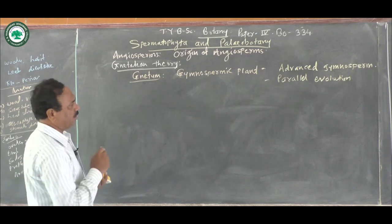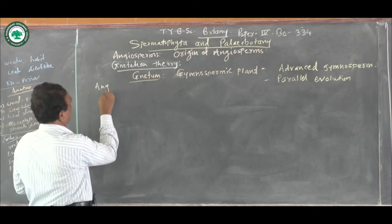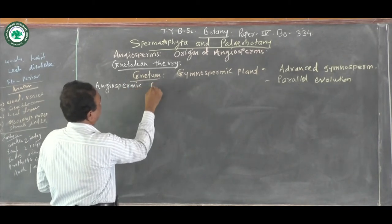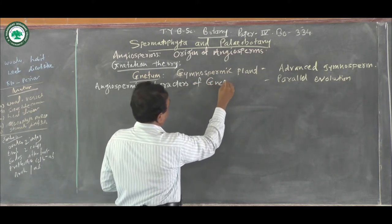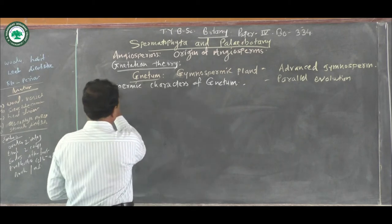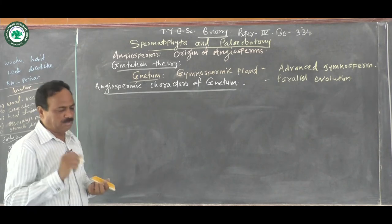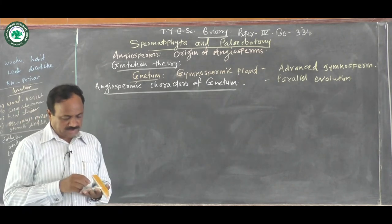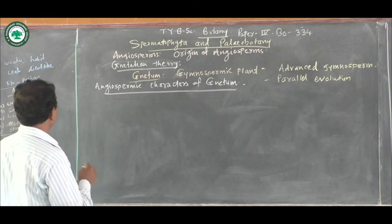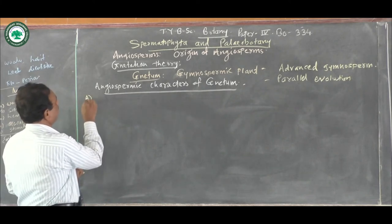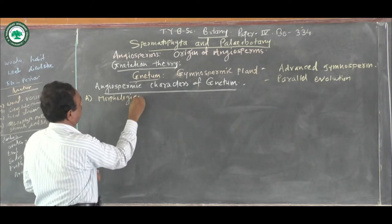Now let us see why many paleobotanists have suggested the Netum as the probable ancestor — it is on the basis of different similarities. So let us see about the angiospermic characters of Netum. As I told you, this Netum is known as the advanced gymnosperm and it shows many characters like the angiospermic plants. Now let us see the morphological characters.